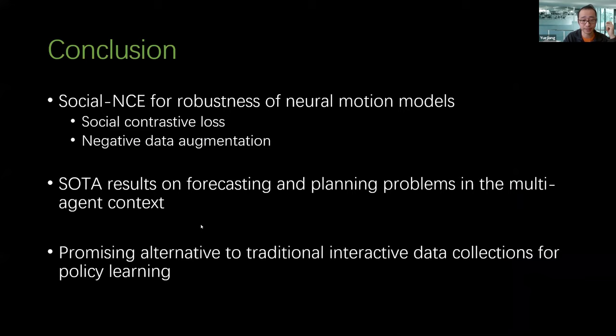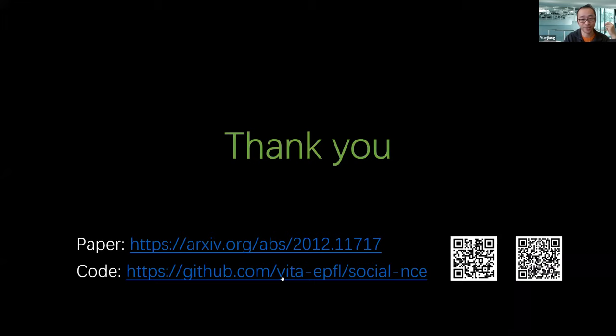To conclude, our method called Social NCE can greatly improve the robustness of neural motion models, and we achieve state-of-the-art in both forecasting problem and planning problem in the multi-agent context. More importantly, we think that this idea may be a very promising alternative to the classical imitation learning for policy learning. If you are interested in more details, please check out our paper as well as our code available online. Thank you.